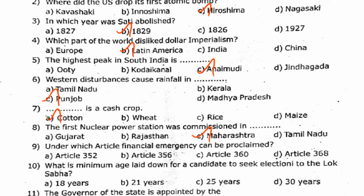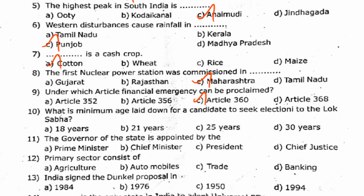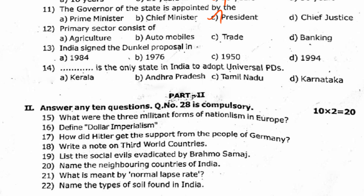Next, under which article can a financial emergency be proclaimed? Answer is option C. Next, what is the minimum age laid down for a candidate to seek election to the Lok Sabha? Answer is option C. Next, the governor of the state is appointed by? Answer is option C. Next, the primary sector consists of? Answer is option A.